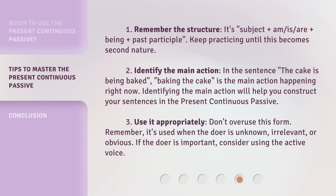Tip 1: Remember the structure. It's subject plus am, is, or are, plus being, plus the past participle. Keep practicing until this becomes second nature. Tip 2: Identify the main action. In the sentence 'the cake is being baked,' baking the cake is the main action happening right now. Identifying the main action will help you construct your sentences in the present continuous passive.